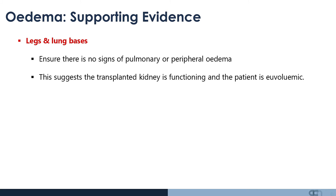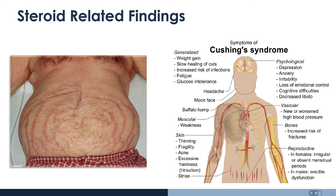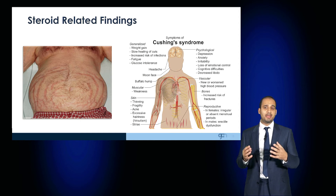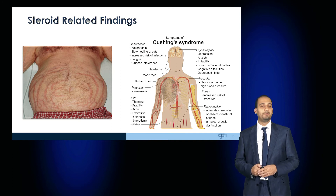A key thing to look for in renal transplant patients is whether they have any signs from immunosuppression. If they're on steroids chronically, they would develop iatrogenic Cushing's. They would have symptoms of weight gain, striae, and multi-system effects including thin and fragile skin, acne. From a psychological point of view, they may have anxiety, depression, or altered emotional control. Vascular complications include hypertension, bone complications include increased risk of fractures, and in males they may have erectile dysfunction, while in females, absent or irregular menstrual cycles.